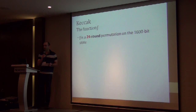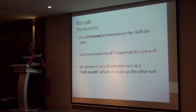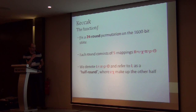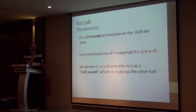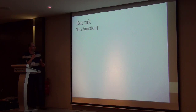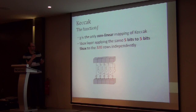The function F has 24 rounds, where each round consists of 5 mappings. The first three mappings of Keccak are linear; we denote their composition by the letter L, referred to as a half-round. The composition of the other two — Chi and Iota — make up the other half. Chi is the only nonlinear mapping of Keccak; it can be viewed as an S-Box layer applying the same 5-to-5-bit S-Box to the 320 rows of the state independently.